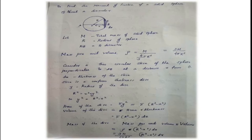Consider a thin slice of disc — a small disc at a distance x from the center. The thickness of the disc is dx, and the radius of the disc is y. M is the total mass of the solid sphere, R is the radius of the sphere, and AB is the diameter. The mass per unit volume rho is equal to M divided by (4/3)πR³, which equals 3M / (4πR³).